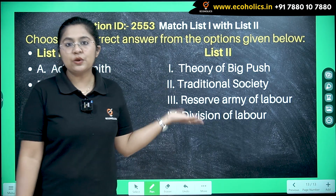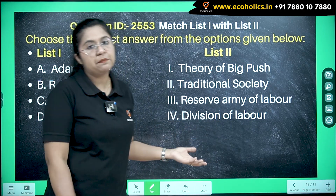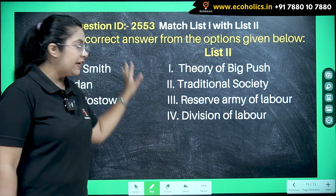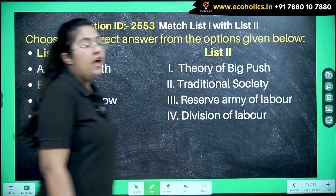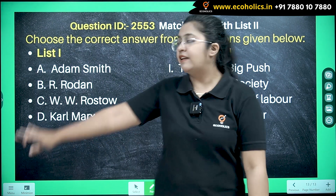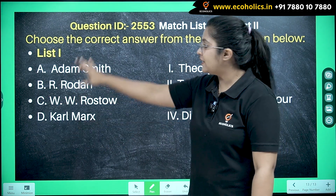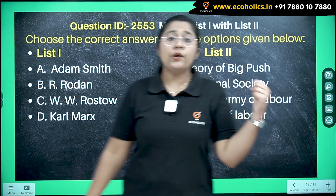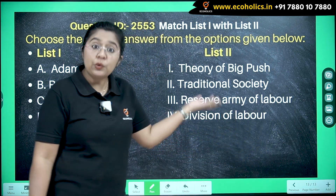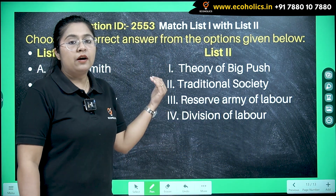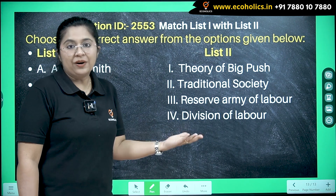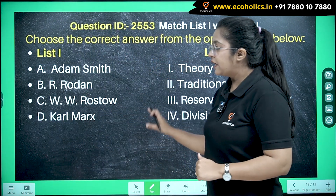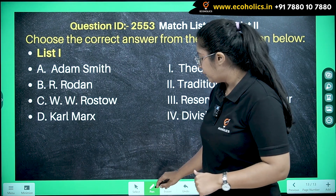This was the question given in last year's question paper. We just have to match the following lists — on one side we have various economists, and on the other side we have the various theories given to the world by them. Let's understand each and every theory in short and mark the correct options.